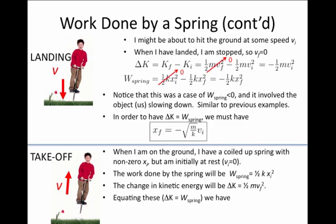If we equate these two by the work energy theorem, then we have an expression for the final velocity, that vf is minus square root of k over m times xi. Notice since xi is initially a negative number, because it's a compressed spring, vf is a positive number. And also notice that this is a case where the work done by the spring is positive, and it's producing a case where we are speeding up. So again, when work is negative, an object will slow down. When work is positive, an object will speed up.